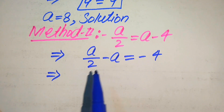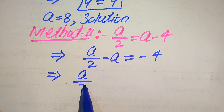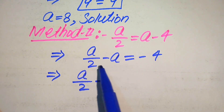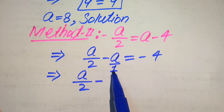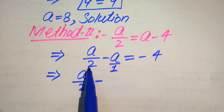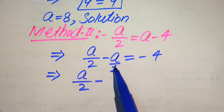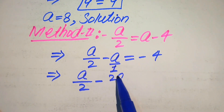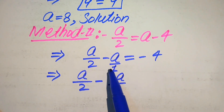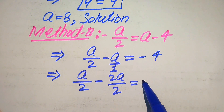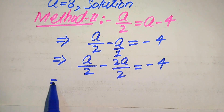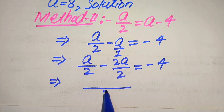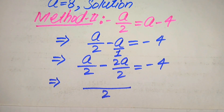Now we need to take the LCM on the left-hand side. The denominator of the first term is 2 and the denominator of a is 1. To make the denominators the same we multiply and divide the second term by 2, giving a over 2 minus 2a over 2 is equals to minus 4. The LCM of both terms is 2.